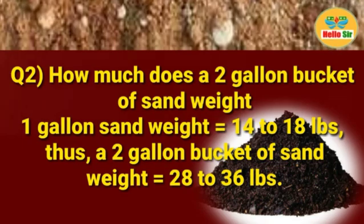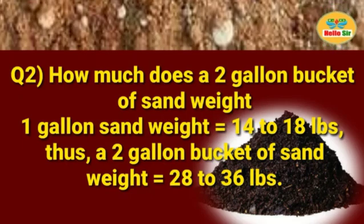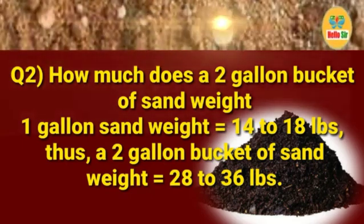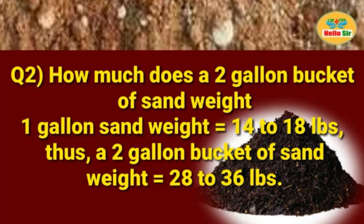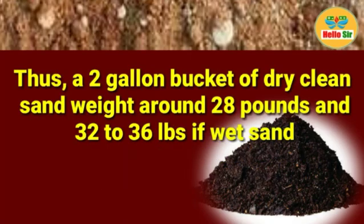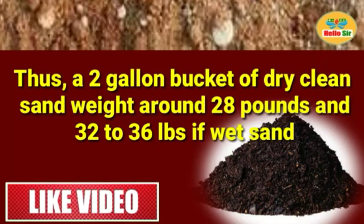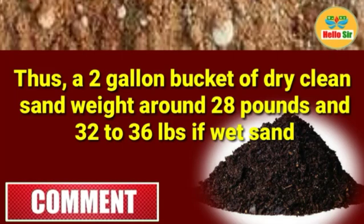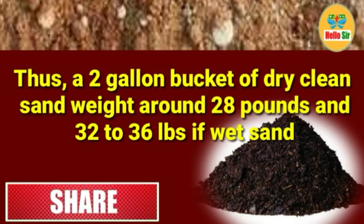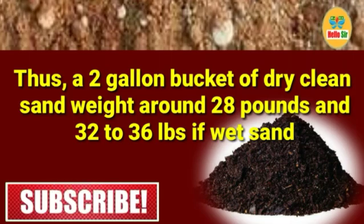One gallon of sand weighs equal to 14 to 18 pounds. Thus a two-gallon bucket of sand weighs equal to 28 to 36 pounds. A two-gallon bucket of dry clean sand weighs around 28 pounds, and 32 to 36 pounds if wet sand.